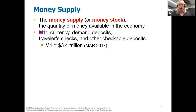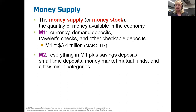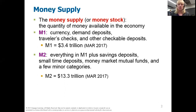The M1 money supply as of March 2017 in the US was $3.4 trillion. The M2 money supply is everything that's in M1 — currency, demand deposits, and traveler's checks — plus savings accounts, small time deposits, money market mutual funds, and a few other categories. When you add those savings accounts and things in, M2 is much larger than M1. In fact, in March 2017 the M2 was $13.3 trillion. This is because money in savings deposits and mutual funds tends to stay in the bank, making it a bigger part of the money supply.